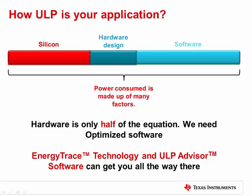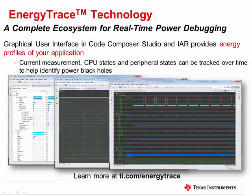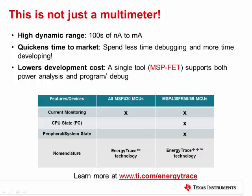We now have Energy Trace Technology and ULP Advisor to help make your MSP430 FR2X and FR4X more efficient. ULP Advisor checks your code against a common set of ultra-low-power rules and notifies you where improvements can be made. Once your code is optimized, you can use Energy Trace to look at your code in real time to understand where your power peaks are. Energy Trace is not your ordinary multimeter — it can run from hundreds of nanoamps to milliamps, giving it great dynamic range, and it's all available with a single tool: either the MSP FET with a target board or the MSP-EXP430FR4133 Launchpad.